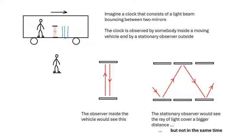The person inside sees the beam simply going straight up and down. The person outside sees the beam tracing a zigzag path as the clock moves — covering a greater distance. Since the speed of light can't increase (that would violate the second postulate), the beam must take longer to complete each bounce. Time passes more slowly for the moving observer.